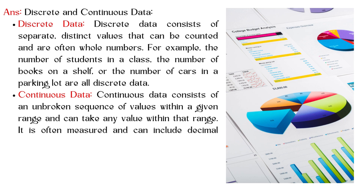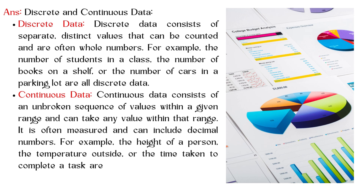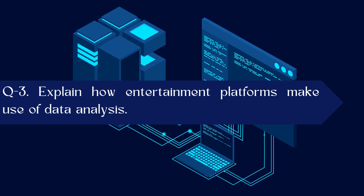Continuous data consists of an unbroken sequence of values within a given range and can take any value within that range. It is often measured and can include decimal numbers. For example, the height of a person, the temperature outside, or the time taken to complete a task are all examples of continuous data.